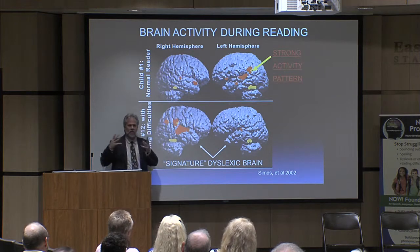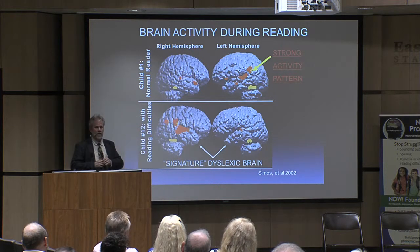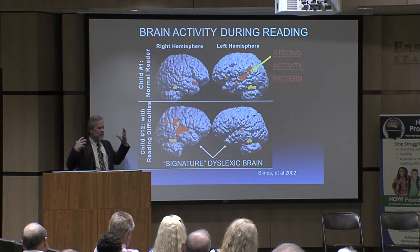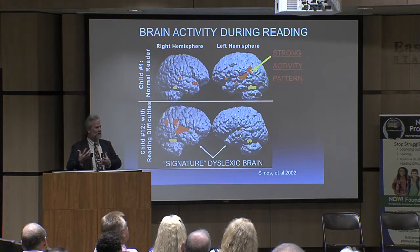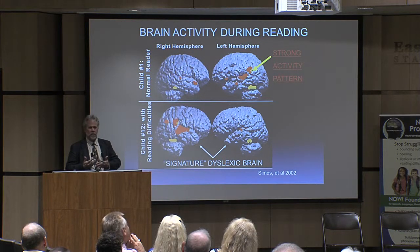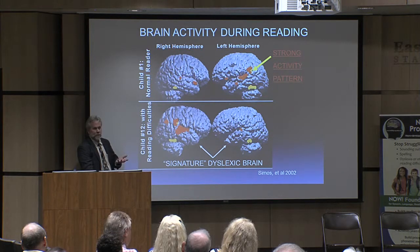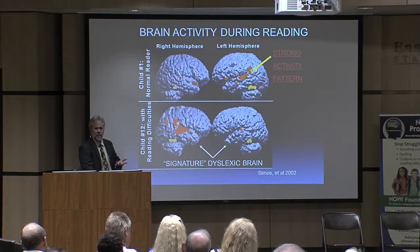Looking at the activity patterns — more activity on the right — the child's brain is trying its best to do the reading, but the right side is not really supposed to be doing reading. The right side is really more geared towards music, mathematics, judging pitch and tone, or emotional connotation in your voice.